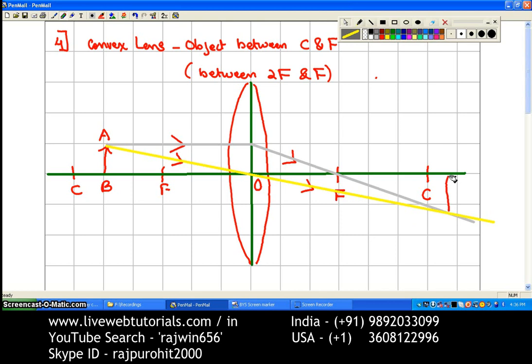So this is going to be our position of the image. I will mark these points as A dash B dash.